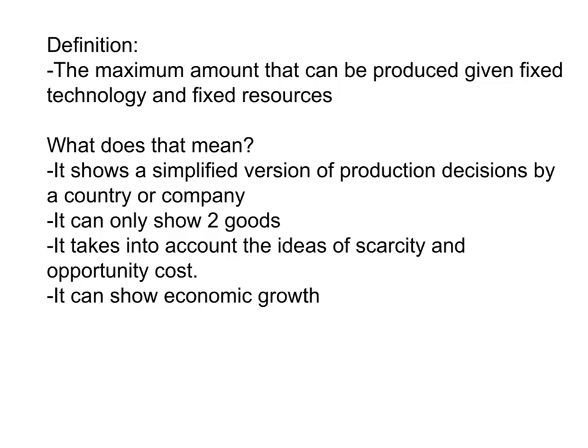It has everything to do with production and nothing to do with consumption, purchasing, or buying. It shows a simplified version of production decisions by a country or company. It can only show two goods at a time. It takes into account the ideas of scarcity and opportunity cost, and it can help show economic growth or economic decline.